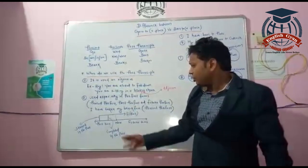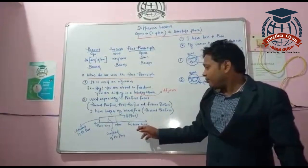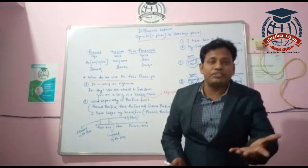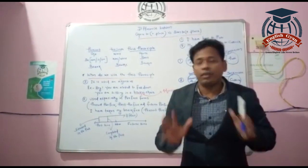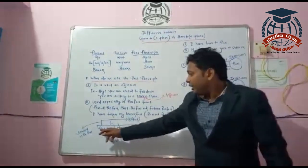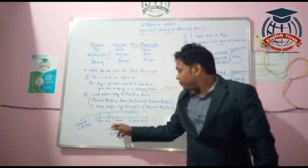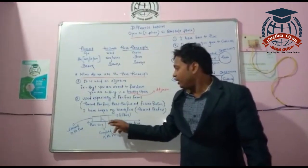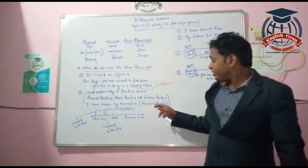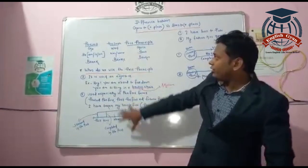The perfect tense works like this: imagine a timeline. 'Now' is the present moment — whatever I am doing right now in this lecture. To the left is the past, and to the right is the future. If an action was started in the past, completed in the past, but its effect is still relevant now, that is called the perfect tense. For example, 'I have been to Puri' and 'My father has gone to Puri.'